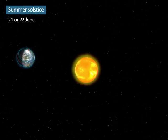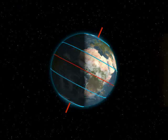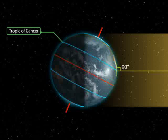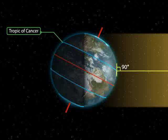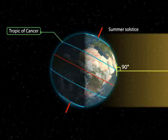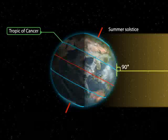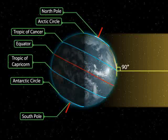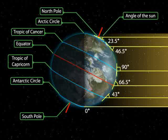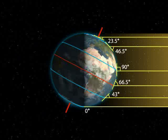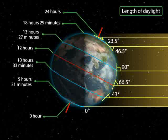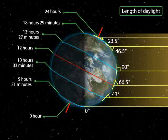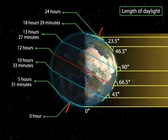Summer solstice: On the 21st or 22nd of June, the overhead Sun is over the Tropic of Cancer. It receives the largest amount of solar radiation. At this time, the northern hemisphere is in the summer solstice, while the southern hemisphere is in the winter solstice. The angle of the Sun decreases towards the poles. On this day, the length of daytime in the northern hemisphere is the longest in the year, while that of the southern hemisphere is the shortest in the year.